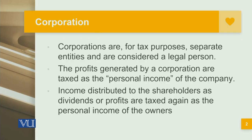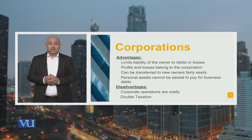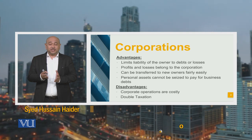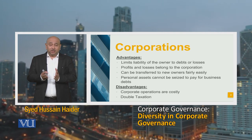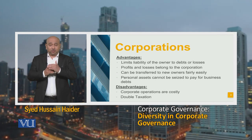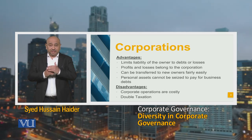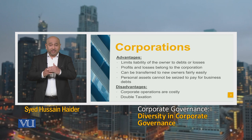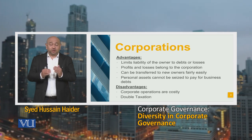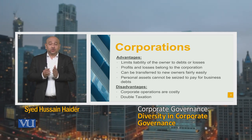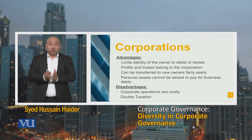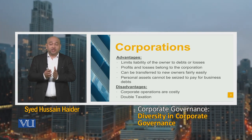The profits generated by a corporation are taxed as the personal income of the company, and the income distributed to the shareholders as dividends or profits are taxed again as the personal income of the owners. So what we see in corporations is that there is double taxation. The first level of taxation is whatever profit the corporation is earning — that is taxed. And then when those profits are distributed to the different shareholders, those shareholders are also taxed for the profit that they are earning.